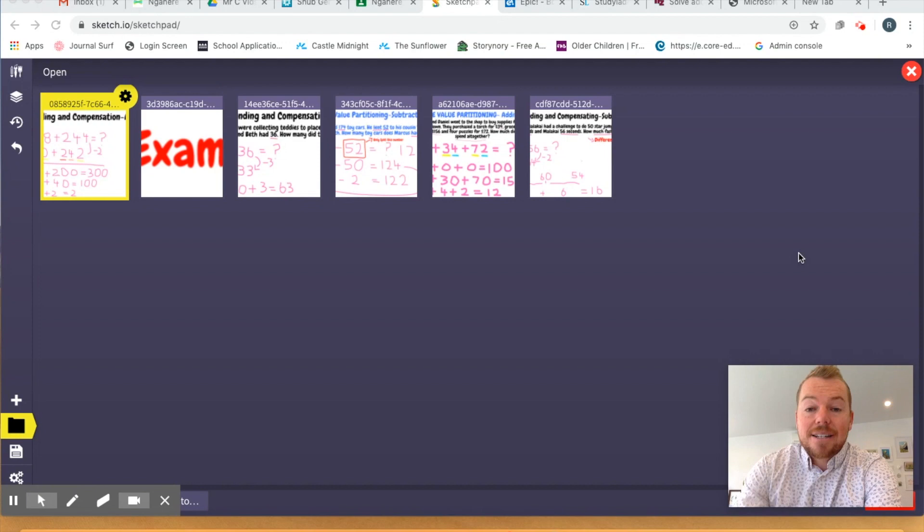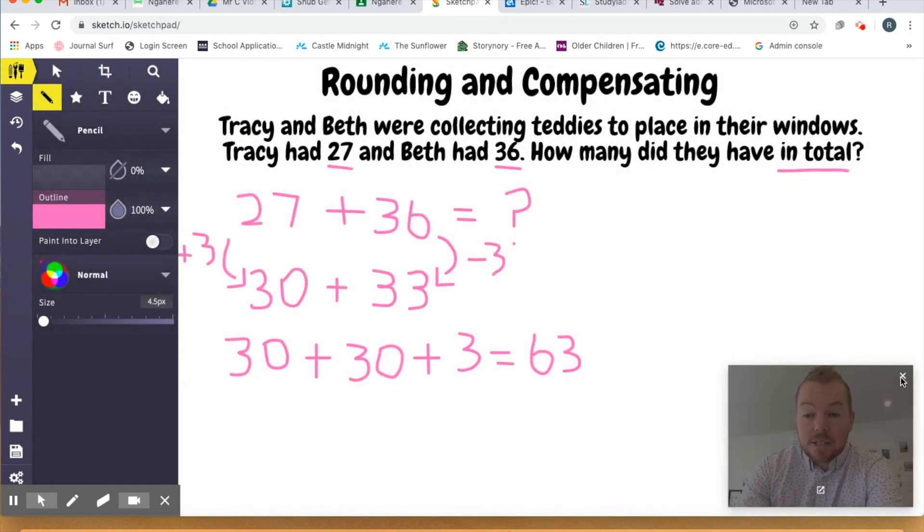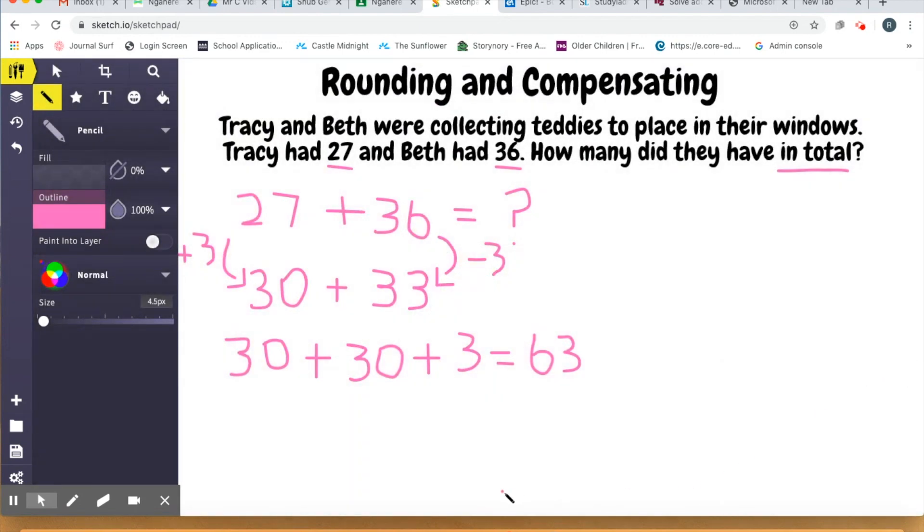The first thing we're going to be looking at is rounding and compensating for basic easy addition. I'm just going to click open into this and get rid of this bad boy there. Now you can see I've put this into a word problem. The word problem here is we've got Tracy and Beth collecting teddies to place in their windows, very popular at the moment. Tracy had 27 and Beth had 36, very healthy teddy collections, and the question is asking how many did they have in total.